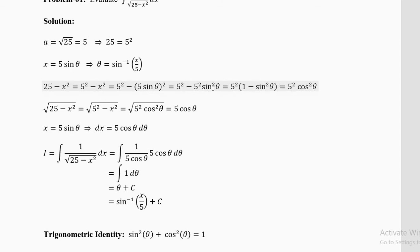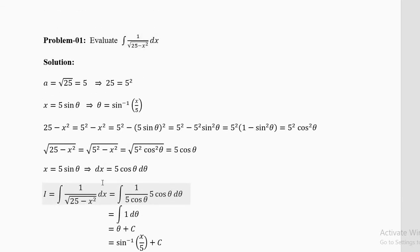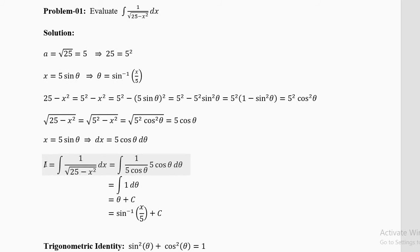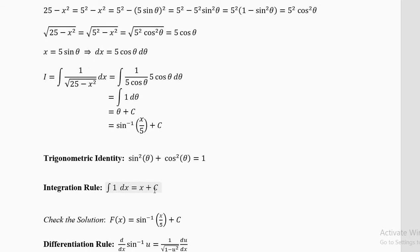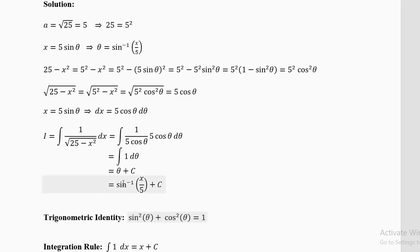Call the integral I. Then 1/√(25 − x²) = 1/(5 cosθ), and dx = 5 cosθ dθ. So I = ∫(1/5 cosθ)(5 cosθ dθ). The 5 and cosθ cancel, leaving ∫1 dθ = θ + C. Since x = 5 sinθ, we have θ = sin⁻¹(x/5), so the answer is sin⁻¹(x/5) + C.